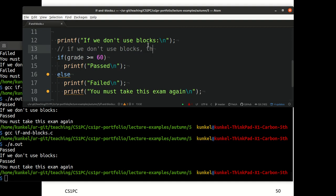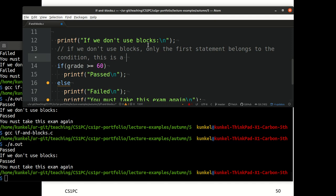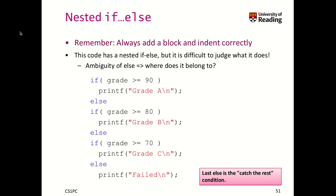If we don't use blocks, only the first statement belongs to the condition. This is a typical mistake that you should prevent. Always use blocks. Here we see this nested if-else that we discussed. There's also the problem that you can have ambiguities of the else parts and the if parts, which makes it really difficult to read. We have if-else, if-else, if-else. But where does this else ultimately belong? It's catching the rest, but it can easily lead to mistakes. So always use blocks.